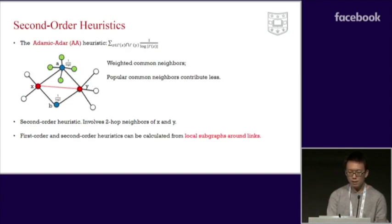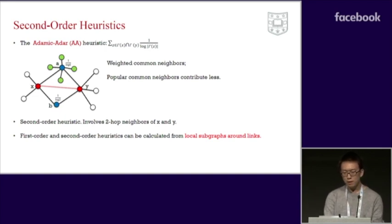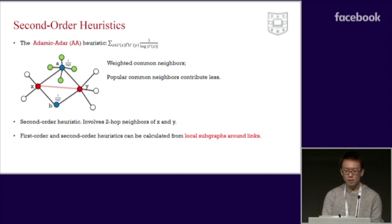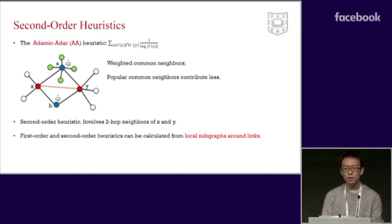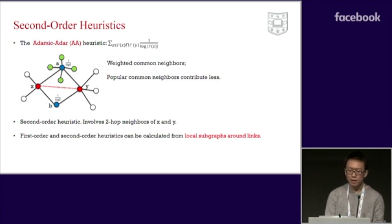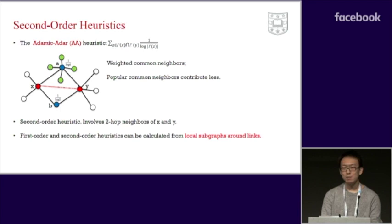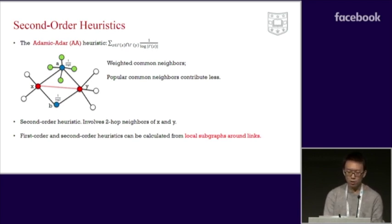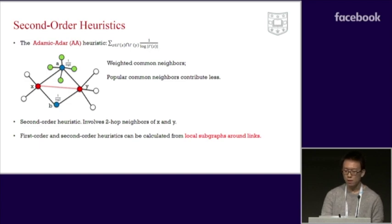Now let's see a second-order heuristic: the Adamic-Adar heuristic. Basically it is a weighted common neighbors where a high-degree common neighbor such as node A is weighted less than a low-degree common neighbor such as node B. It assumes that both x and y connecting to A is not surprising because A also has many other connections. The AA heuristic is a second-order heuristic because it involves up to two-hop neighbors of x and y.